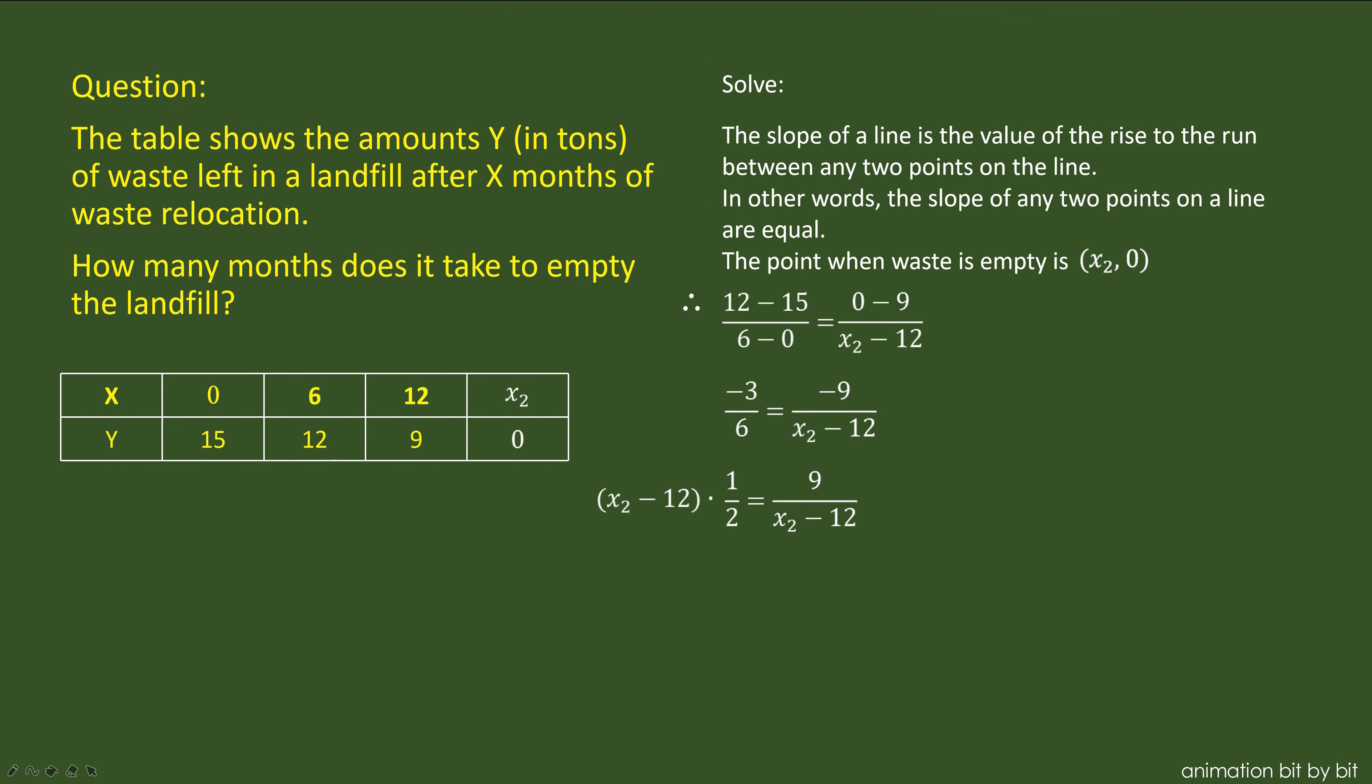Now we're going to simplify both sides, and then multiply each side by x₂ - 12 to leave 9 by itself. Next, multiply both sides by 2, and you get x₂ - 12 = 18.